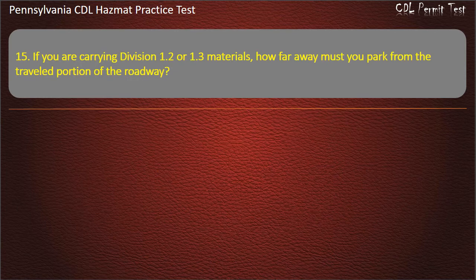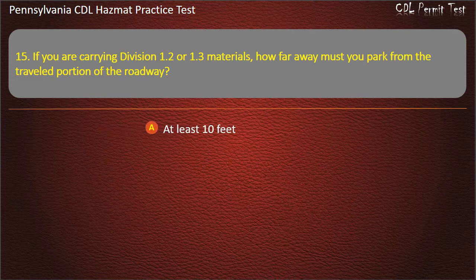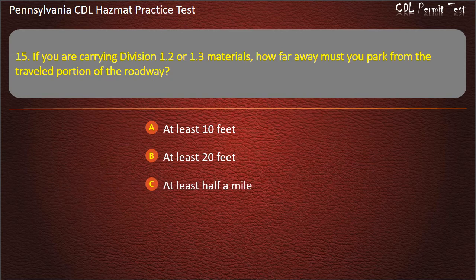Question 15. If you are carrying Division 1.2 or 1.3 materials, how far away must you park from the traveled portion of the roadway? Options: At least 10 feet; At least 20 feet; At least half a mile; At least 5 feet. Answer: At least 5 feet.